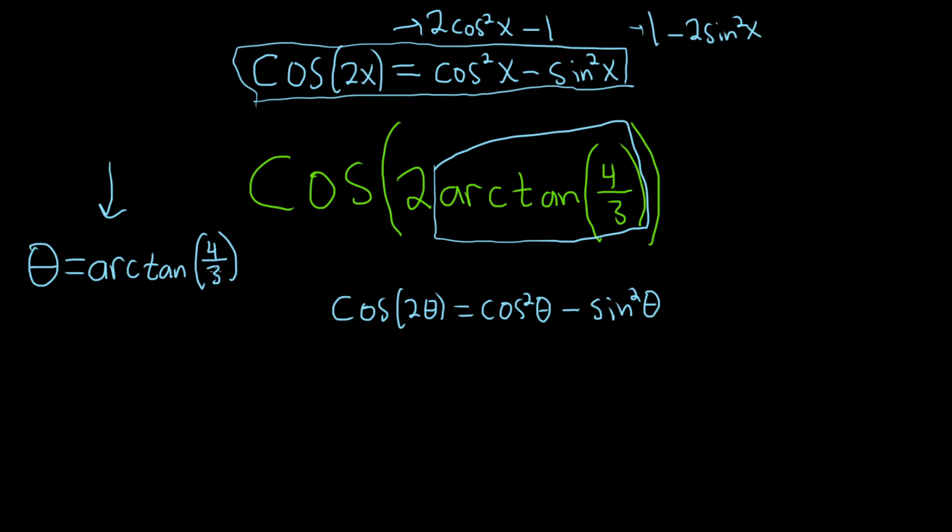So the arctangent takes 4 over 3 and sends it to theta. So it's an inverse function. So tangent should undo that. It should take theta and send it back to 4 over 3. And now we can use SOH CAH TOA to draw our triangle.